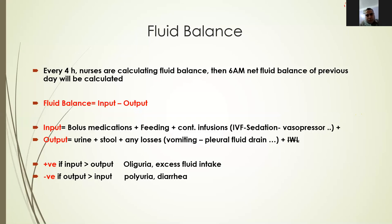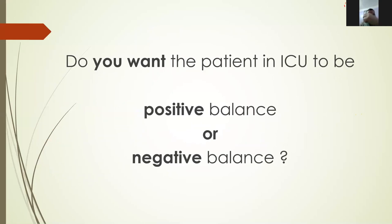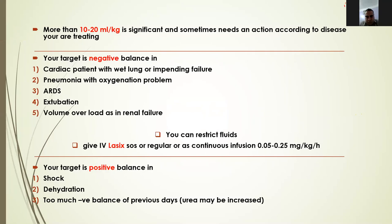Do you want the ICU patient to be in positive or negative balance? The answer is: it depends on the case and diagnosis. A difference of more than 10 to 20 ml/kg is significant — for a 10 kg patient, 100 to 200 ml positive or negative may be significant. Your target is negative balance in patients with cardiac failure and wet lung, pneumonia with oxygenation problems, ARDS — defined as acute non-cardiogenic pulmonary edema — and in cases of volume overload such as renal failure, as well as before extubation to improve success.